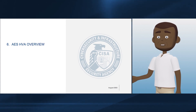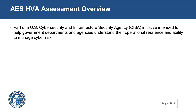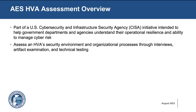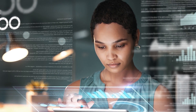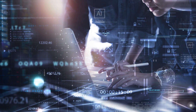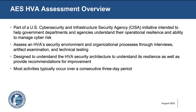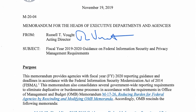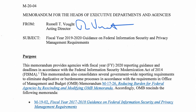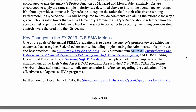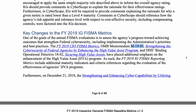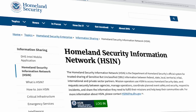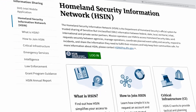Now let's examine the AES HVA training course. The HVA assessment is part of a CISA initiative intended to help government departments and agencies understand their operational resilience and ability to manage cyber risk. It assesses a high-value asset security environment and organizational processes through interviews, artifact examination, and technical testing. It is designed to understand the HVA security architecture and its resilience, as well as to provide recommendations for improvement. M1903 is the 2018 memorandum strengthening the cybersecurity of federal agencies by enhancing the high-value asset program. The M1903 supplemental guidance offers an in-depth overview of the mandate to participate in the AES HVA course to support the non-tier one HVA community. HVA community documents are located on OMB Max.